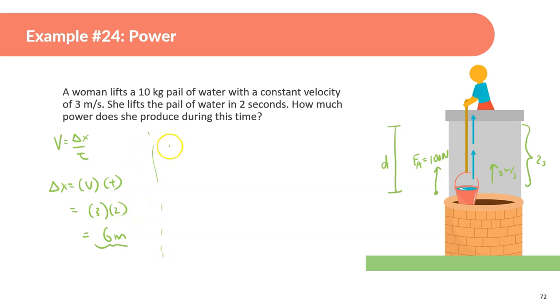Now let's find the work which is the force which is 100 and it goes up 6 meters. So, this is 600 joules. The power is just going to be the work which is 600 divided by the time which is 2 seconds, and it's going to be 300 watts. Wow. She is pretty strong.